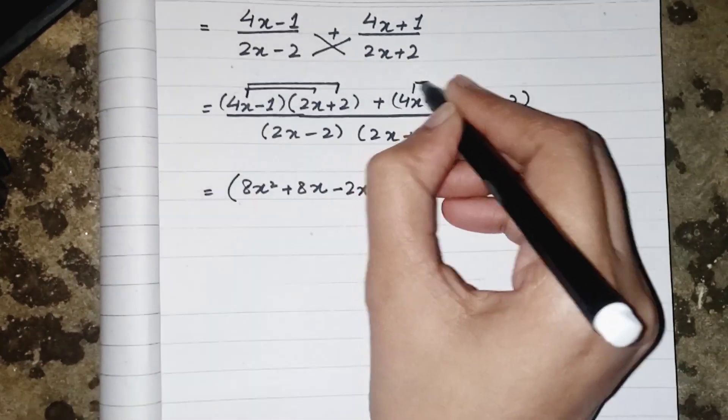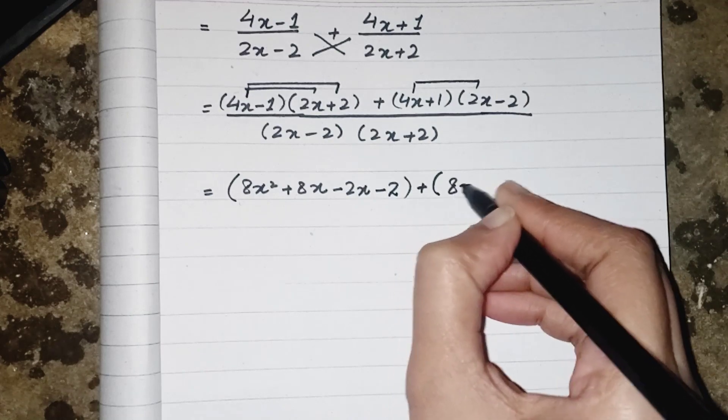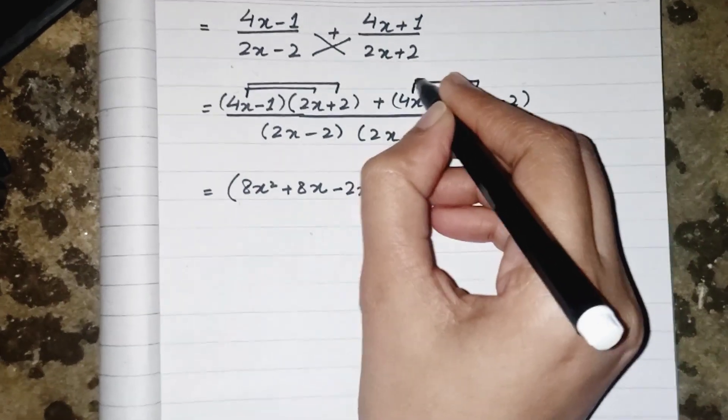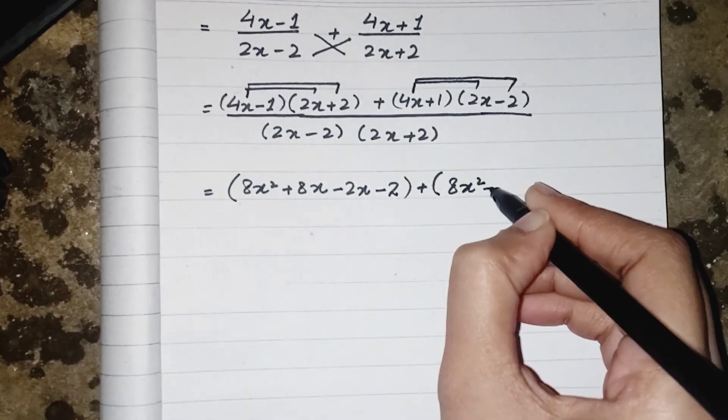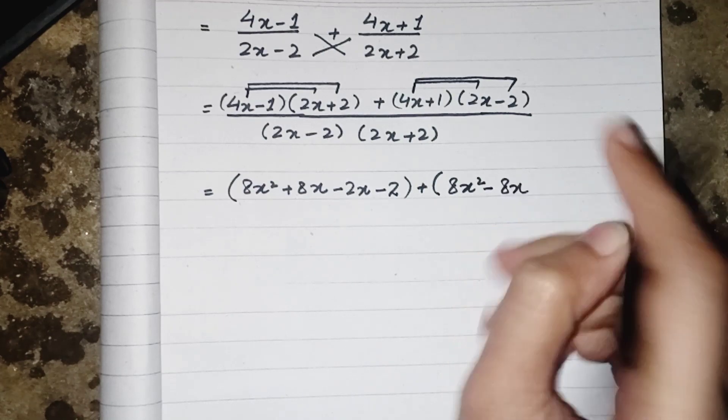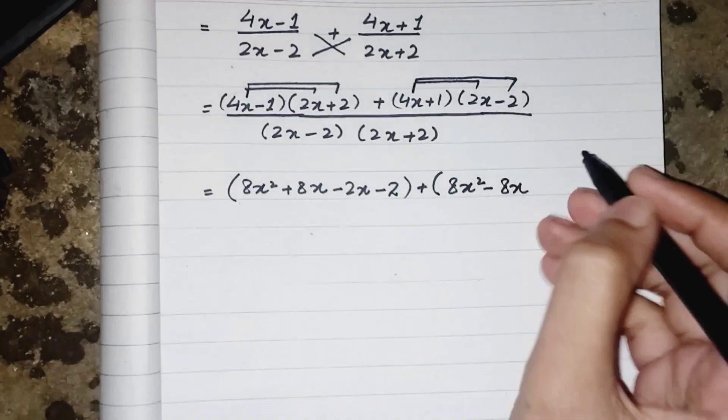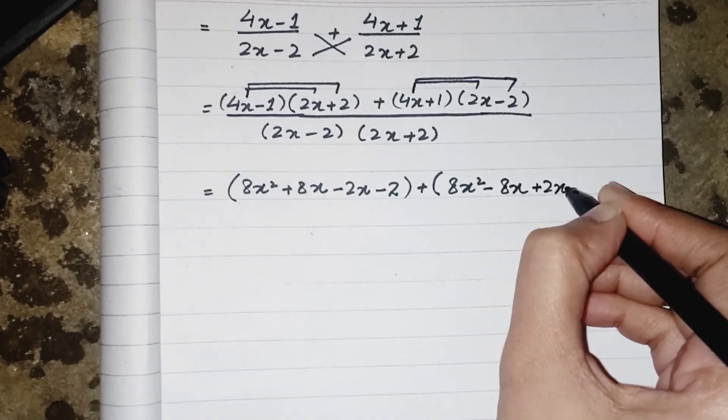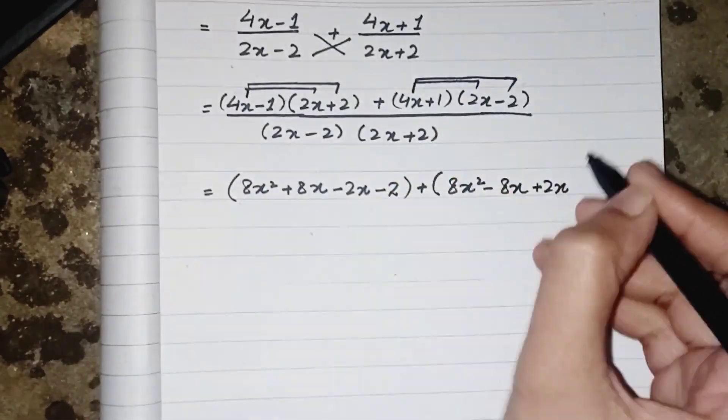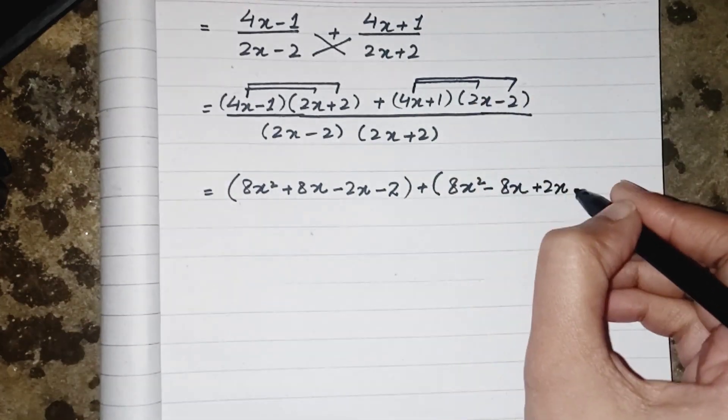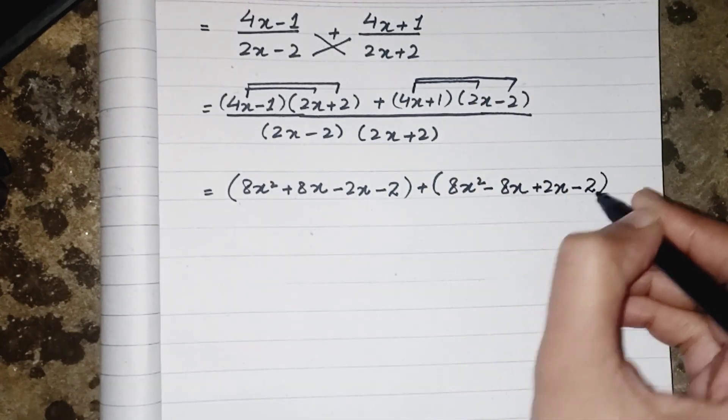Now this 4x multiplied by 2x will also give us 8x squared. 4x multiplied by minus 2 will give us minus 8x because this 2 is with negative sign. 1 multiplied by plus 2x will give us plus 2x, plus 1 multiplied by minus 2, plus minus minus when 2s are 2s.